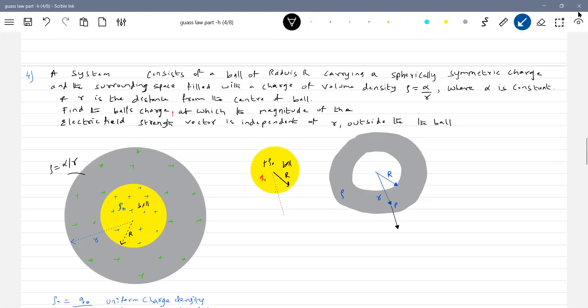Now look at the situation and try to write the equations. The field strength here be E1 due to this, be E2. Can you calculate E1? Where the point P lies for the ball, it will lie outside. What is electric field strength? Q₀ by 4πε₀R². You write it.